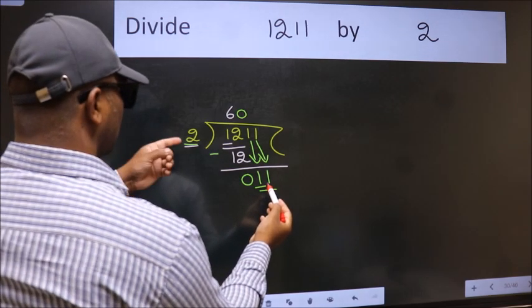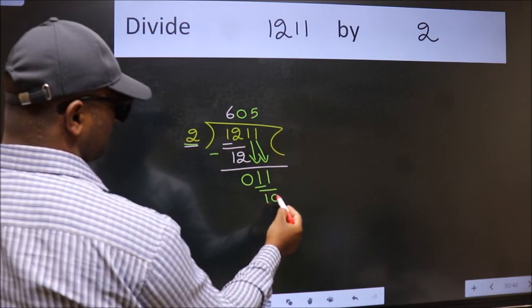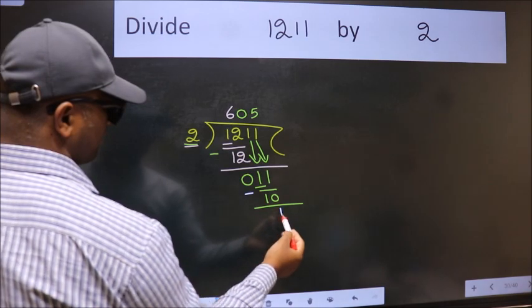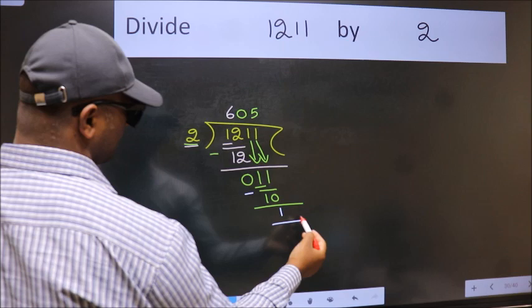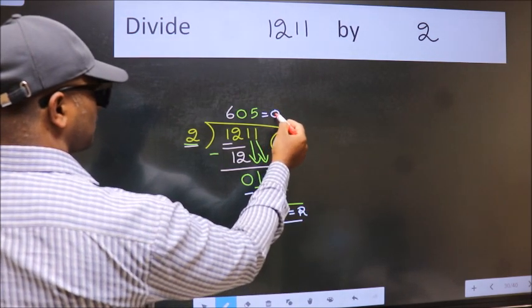A number close to 11 in the 2 table is 2, 5, 10. Now we subtract and get 1. No more numbers to bring down, so we stop here. This is our remainder and this is our quotient.